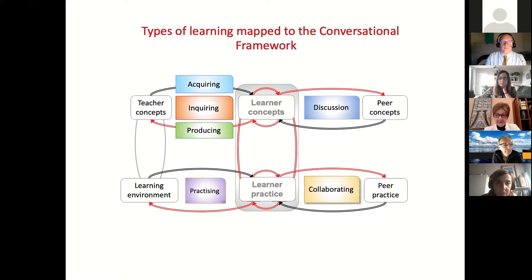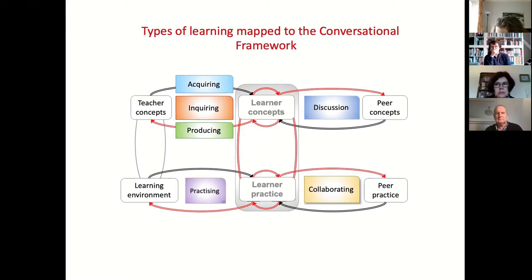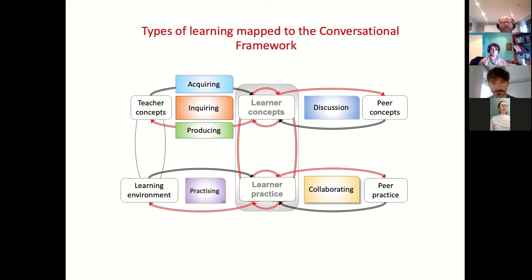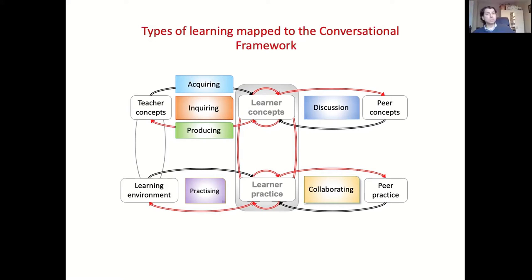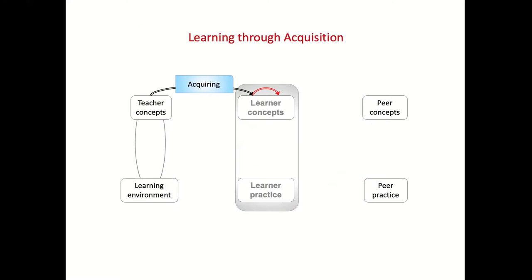This is the complete conversational framework, embracing six learning types. These are meant to be six distinct learning types, all of which work together to complement and enhance each other. It derives from a wide range of research studies and teaching-learning theories — the slides contain references so you can follow up. The essential point is that all these types of learning work together to complement and enhance each other. We don't want to focus on any one too much, but they're all of value to the students.